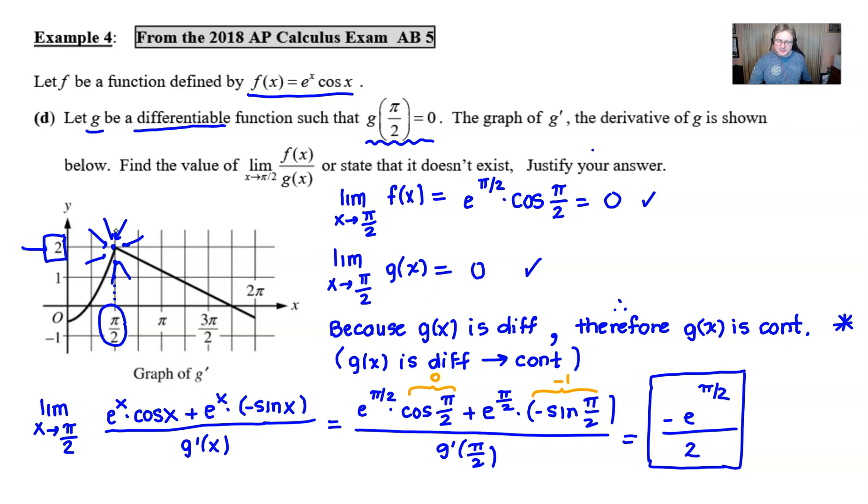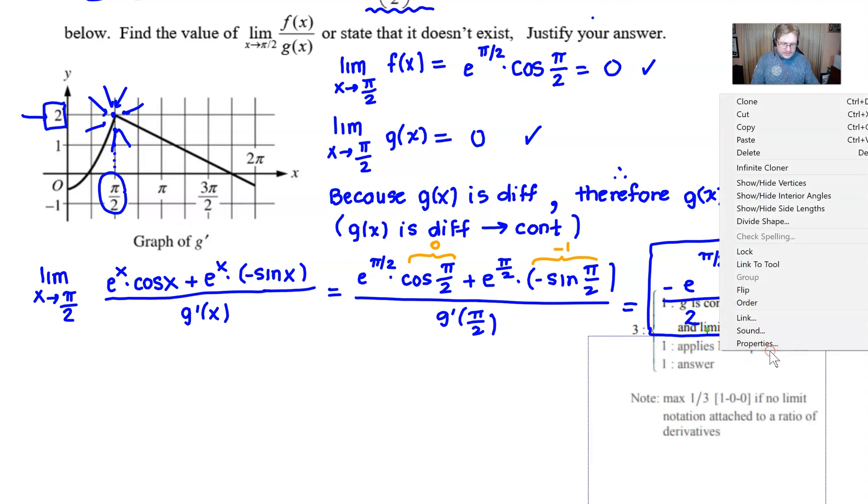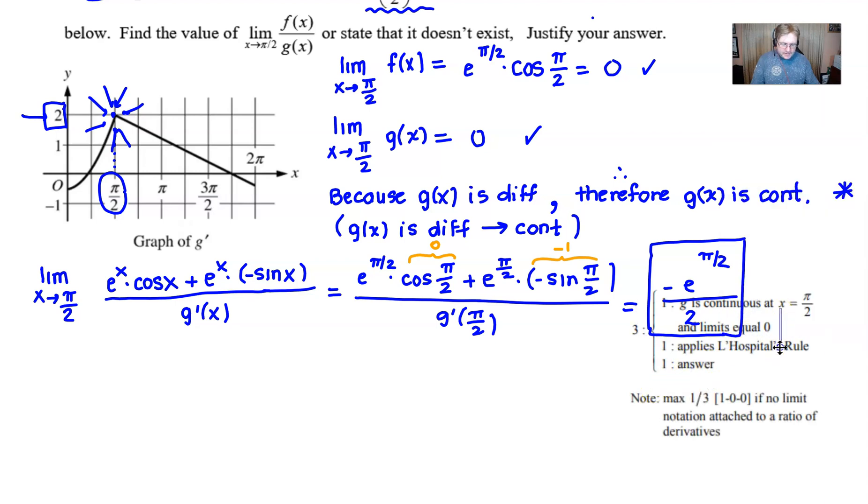So there is your solution to the 2018 AP question AB5 part D that was worth a full three points. And I believe I've got the scoring rubric here. I know it's kind of covered up a little bit, unfortunately. Maybe I can, with any luck, move it out of the way. I don't know if it's going to want me to move it out of the way. But anyhow, you can kind of see the three points that were being awarded for those particular pieces, stating that g was continuous, and doing the two separate limits. So that's all of this stuff worth a point.